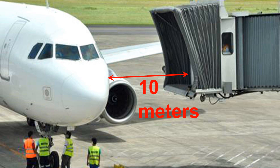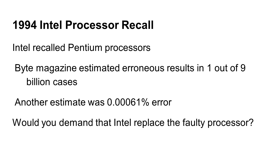In fact, you would not accept that even if the plane is 1 meter away from the jet bridge. You want perfection. You demand perfection. You deserve perfection. Computers are the same. Your computer programs cannot have any tiny trivial mistake. Computers do not know what to do if your programs have any mistake. I did not set these rules — you did. You demand perfection, so do computers.